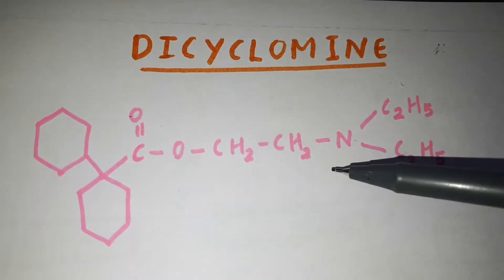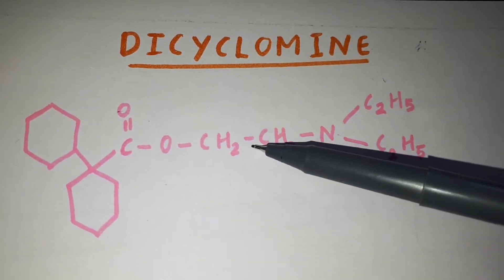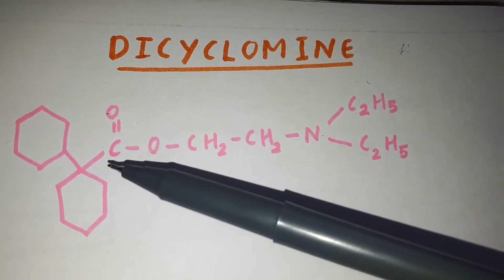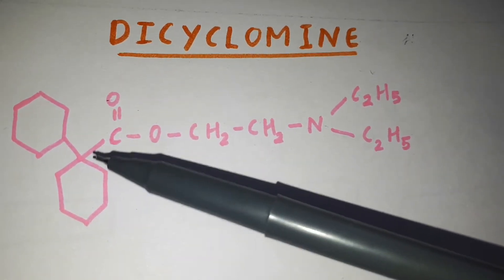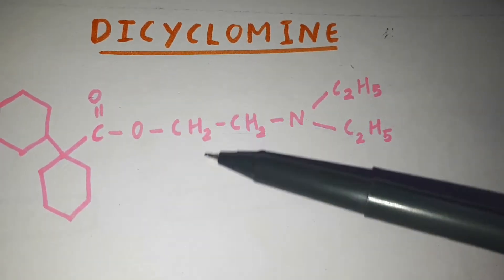In dicyclomine, to the amino group two ethyl groups are attached, and there is a CH2-CH2-O-C double bond O. These two cyclic rings are connected to each other. That is the structure of dicyclomine.